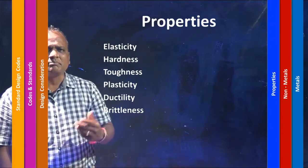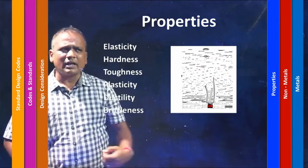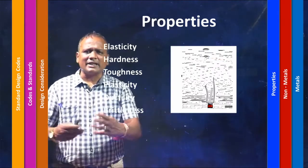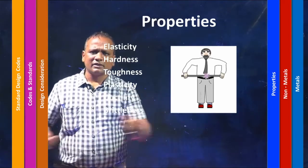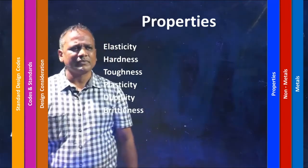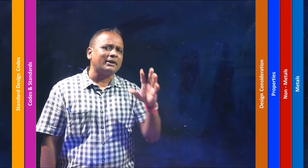Next, brittle — the best example is glass. Whenever you put a load, it just gives off and does not return back; it goes directly into the plastic region and fractures. These are the common properties we look at in engineering materials before designing, chosen depending upon the purpose and application of the element.